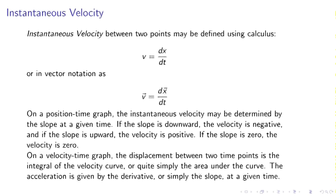Instantaneous velocity between two points may be defined using calculus, v equals dx dt, or in vector notation as v equals dx dt. On a position time graph, the instantaneous velocity may be determined by the slope at a given time. On a velocity time graph, the displacement between two points is the integral of the velocity curve.